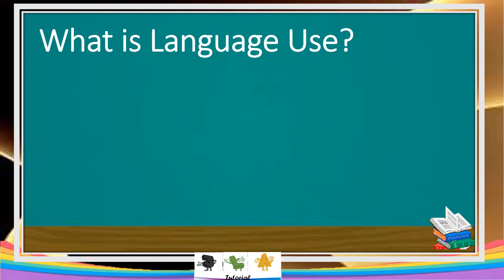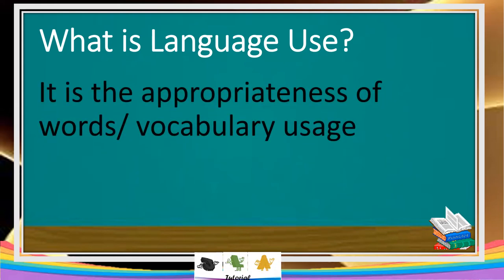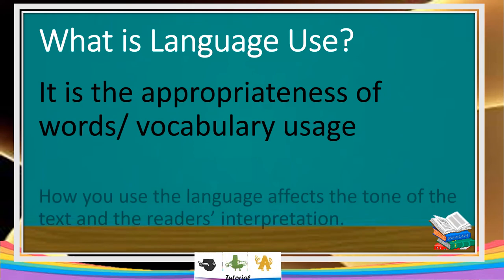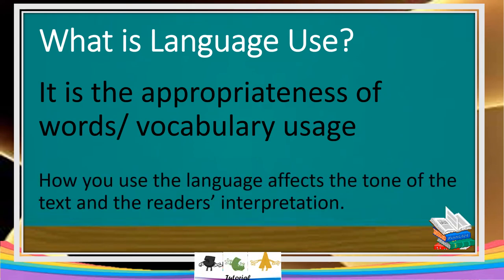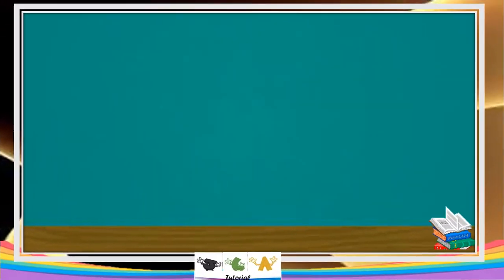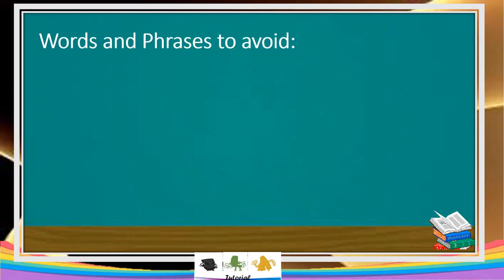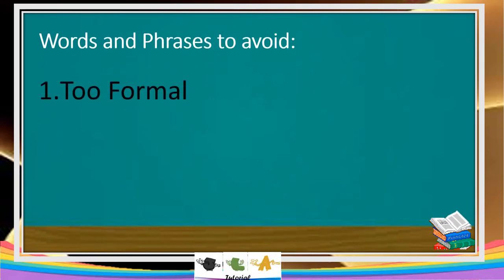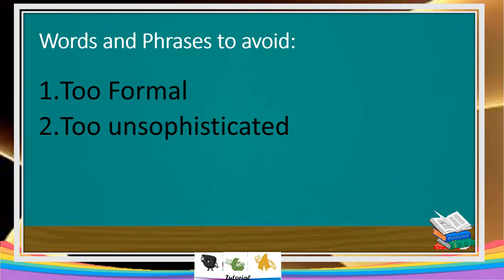Then let's proceed to language use. This is very important. It is the appropriateness of word and vocabulary usage. How you use language affects the tone of the text and the reader's interpretation. Here are the words and phrases to avoid: too formal, too unsophisticated, and too vague.